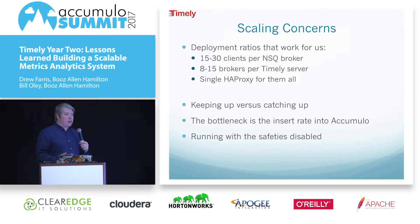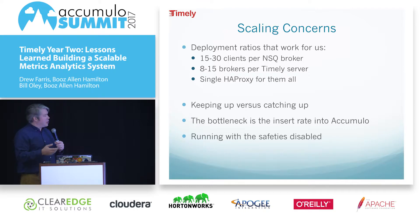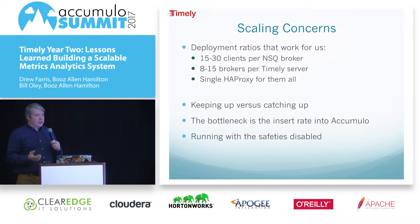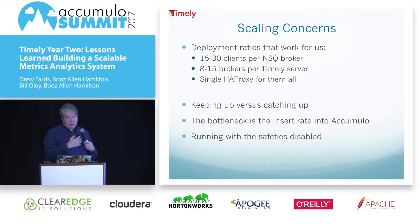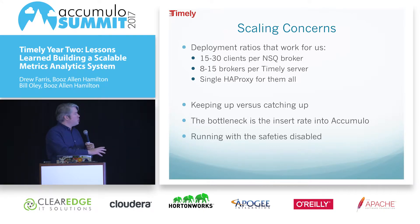Part of identifying an effective fan-in architecture is identifying the ratios of machines in each tier. We found 15 to 30 CollectD clients per NSQ broker worked well, and 8 to 15 NSQ brokers per Timely server, using a single HAProxy for all of them. When planning this architecture, it's important to consider keeping up versus catching up. Keeping up means consuming all the metrics being generated at any point in time. Catching up is when we encounter a failure and metrics have queued up. Those ratios should give you a basic capability of catching up if you ever fall behind.